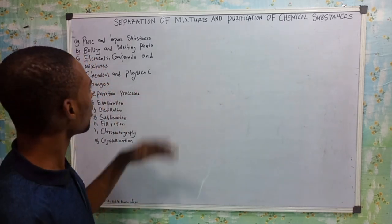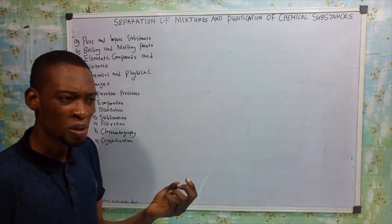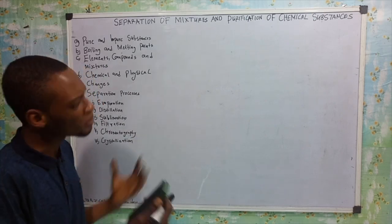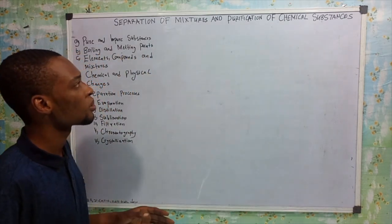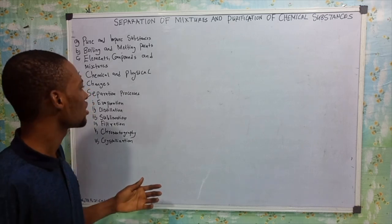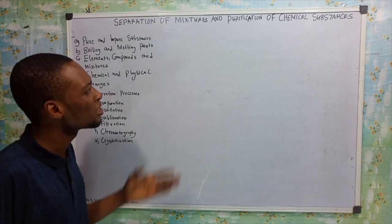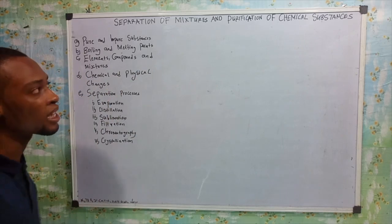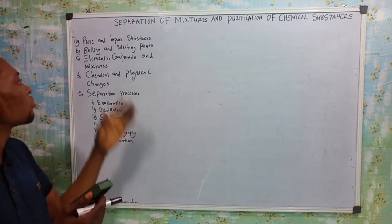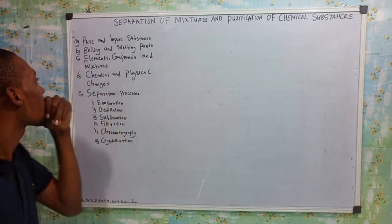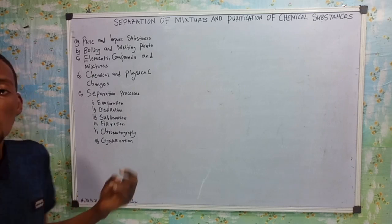Now, what is a mixture and what are substances? To separate mixtures, it simply implies that a mixture is a combination of something. Purification of chemical substances means some chemical substances can be impure. Under separation of mixtures and purification of chemical substances, you are expected to know the meaning of pure and impure substances, meaning of boiling and melting point, elements, compounds and mixtures, then chemical and physical changes.